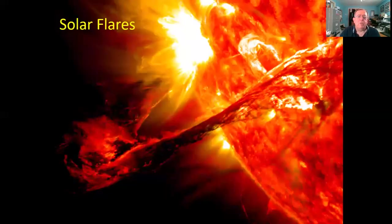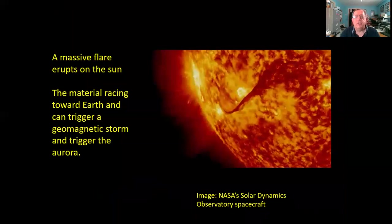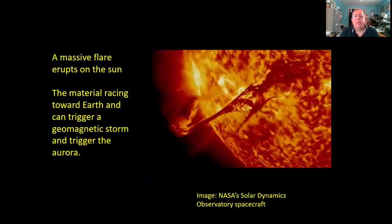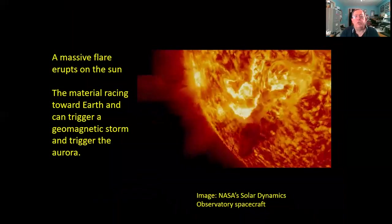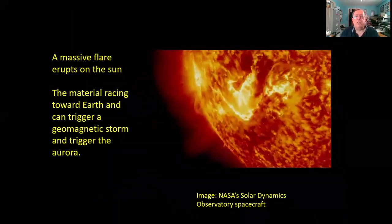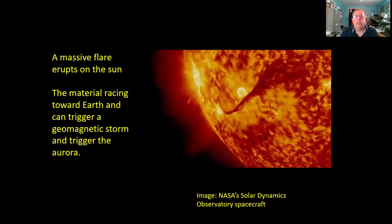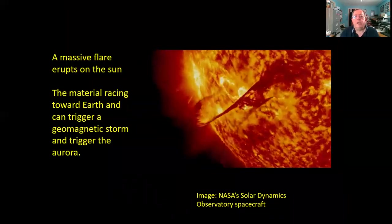Sometimes the sun is even more active and throws off solar flares. Here's a great image of an enormous eruption from the surface of the sun, and I have an animation showing how the surface of the sun is boiling and changing all the time—an absolutely huge eruption coming off the sun.